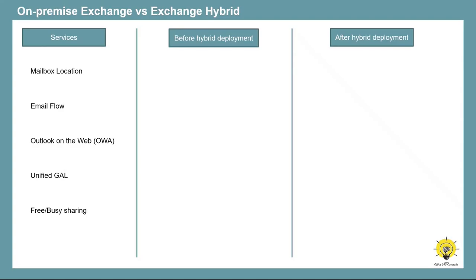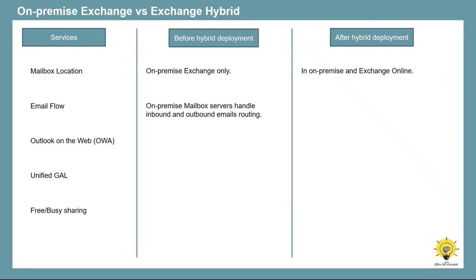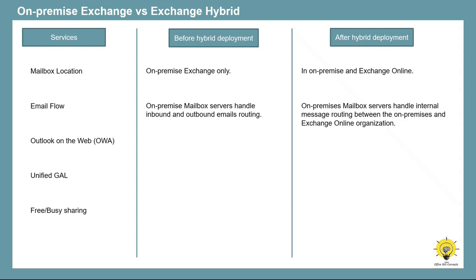Let's compare some services with on-premise Exchange and Exchange Hybrid. When you have on-premise Exchange Server, the mailboxes are stored only in the on-premise mailbox server. But when you deploy Exchange Hybrid, the mailboxes can be stored either in on-premise or in Exchange Online. When you have only on-premise Exchange, email routing is handled only by the on-premise Exchange Server. But after deploying Exchange Hybrid, you can set up either centralized or decentralized mail flow and control email routing from on-premise or Exchange Online.